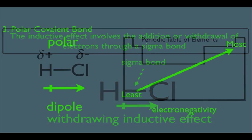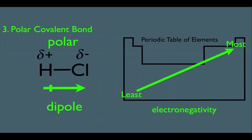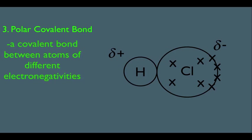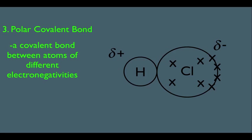Going back to our polar covalent bond, what this means is that Cl is not evenly sharing these electrons — it's pulling them over more to its side, giving it a partially negative sign and the hydrogen a partially positive sign. This still means that chlorine has an octet. So what's a polar covalent bond? It's simply a bond between atoms of different electronegativities.